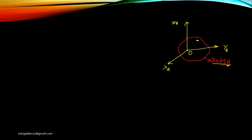Now we are considering point P which is situated on the rigid body, and we have to find the position of this point P with respect to body frame A. We want to find the position of point P with respect to frame A. In a Cartesian system, we can easily identify the position and orientation of any object.